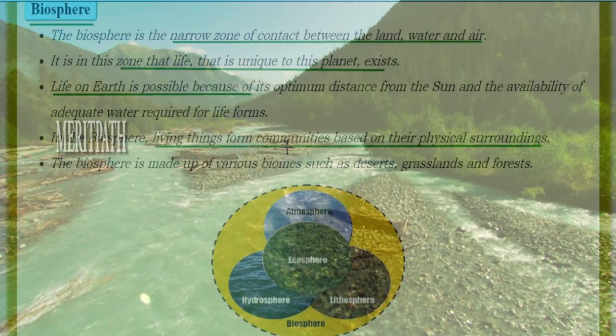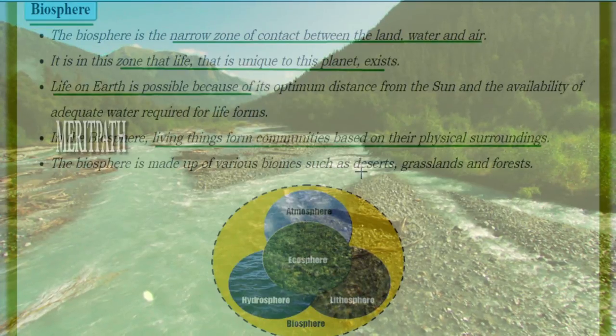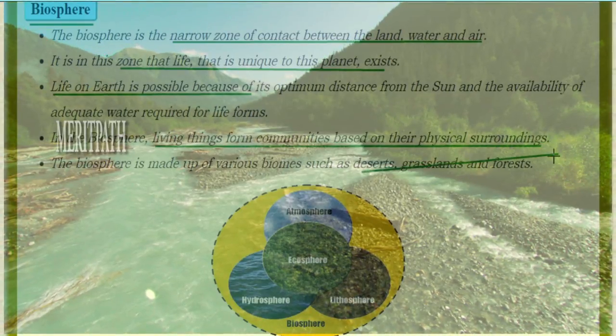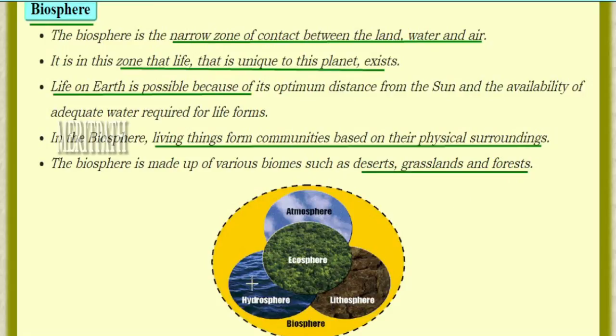In the biosphere, living things form communities based on their physical surroundings. The biosphere is made up of various ecosystems such as deserts, grasslands, and forests, and comprises the atmosphere, hydrosphere, and lithosphere.